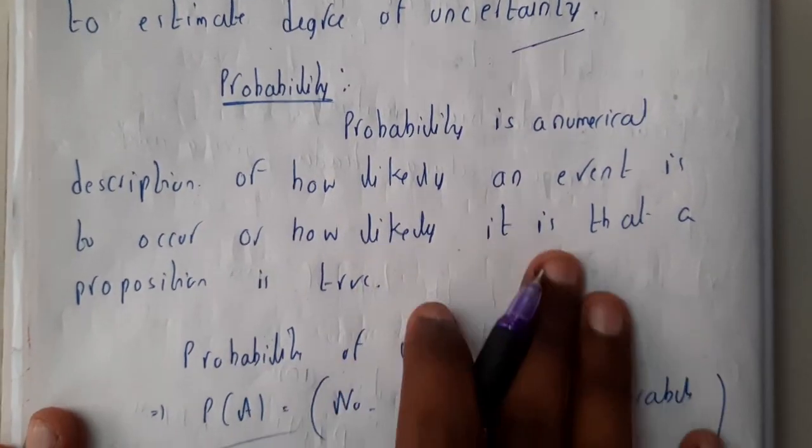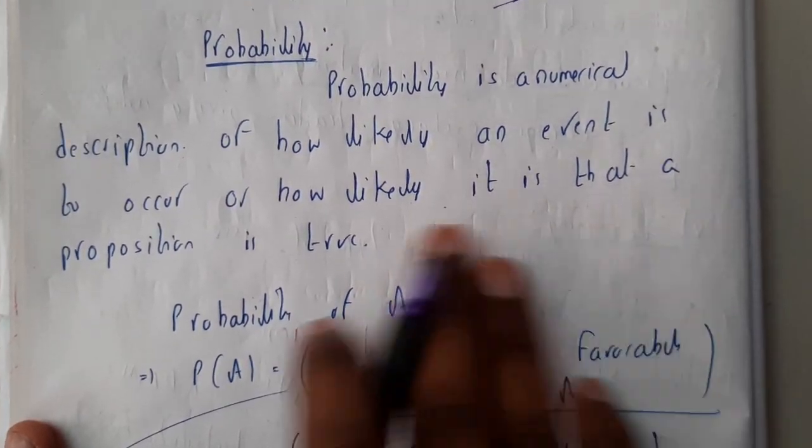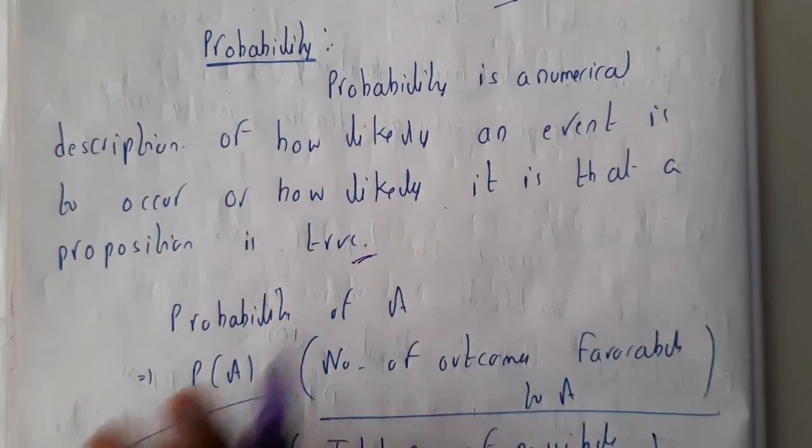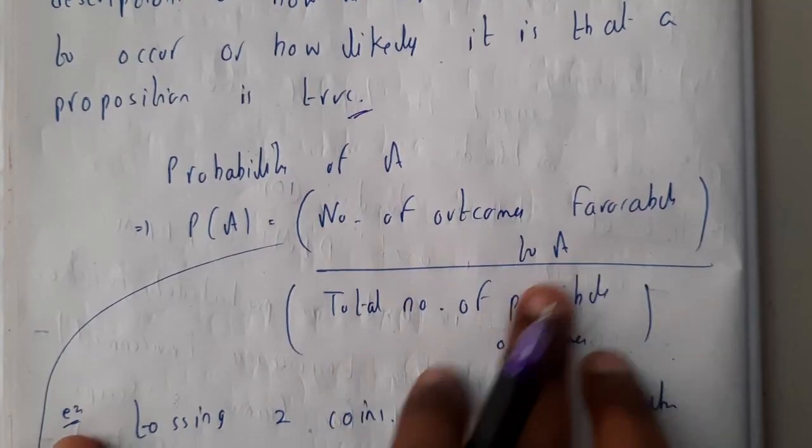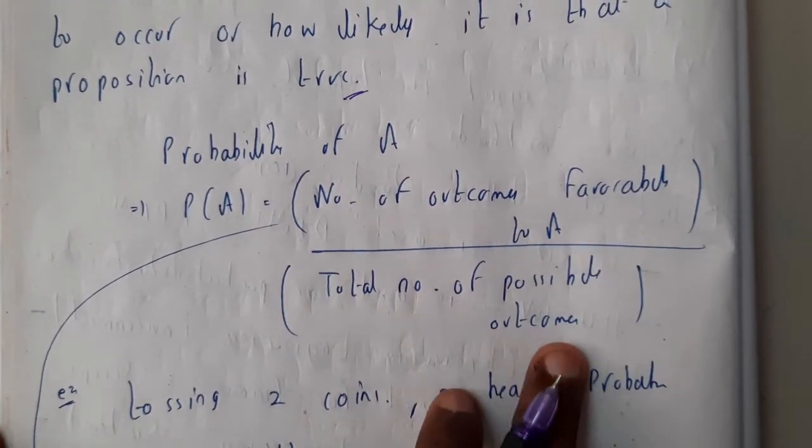Probability is a numerical description of how likely an event is to occur or how likely it is that a proposition is particularly true. Probability of A, P(A), is equal to number of outcomes favorable to A by total number of outcomes.